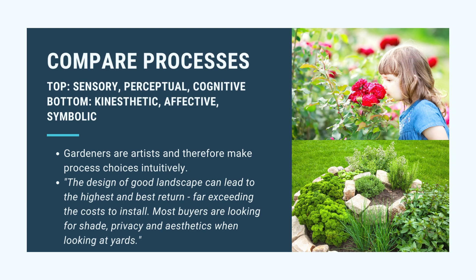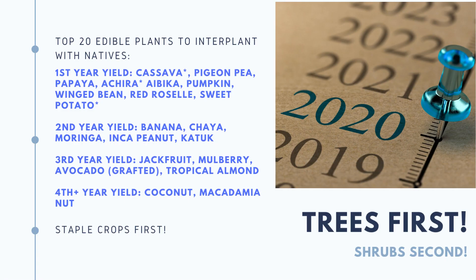The most important thing is to have fun and to create a process that feels good to you. For me, going under an oak where it's nice and shady is going to allow me to plant things I can live off of — like pigeon pea, acheer, ibica, pumpkin, winged bean, red roselle, and sweet potato.